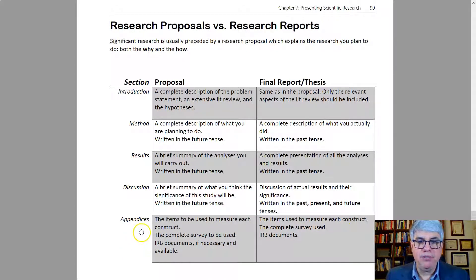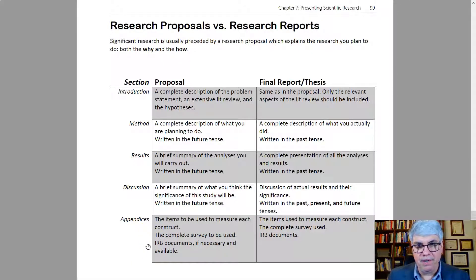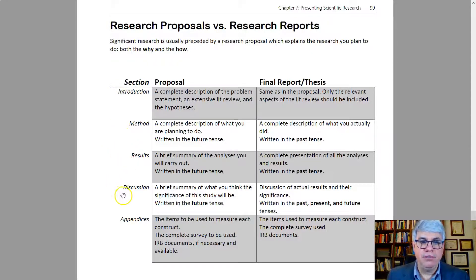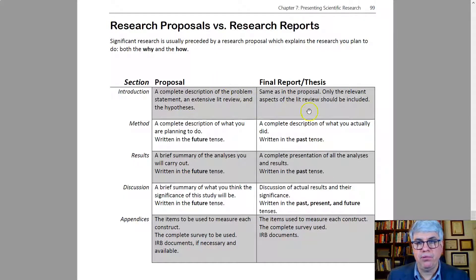The appendices in the proposal should include the items used to measure each construct, the complete survey to be used, and IRB documents if necessary and available. The final report and thesis will basically have the same appendices. So in summary, the research proposal is heavy on the introduction and methods, light on results and discussion, and heavy on appendices — while the final thesis is a modification of your proposal with all the details filled in.